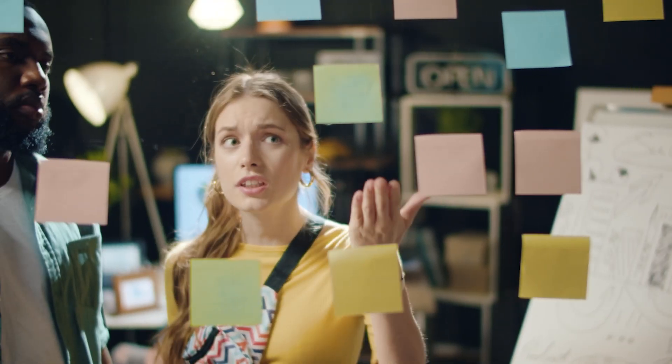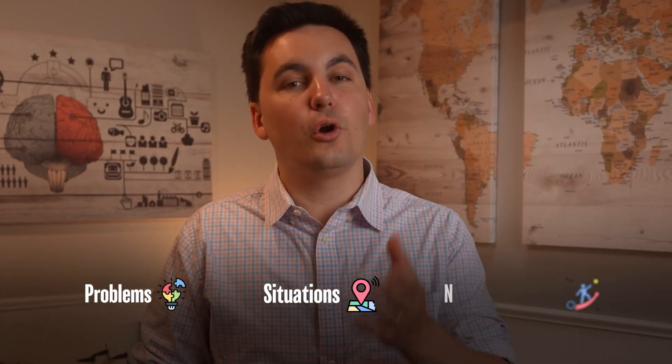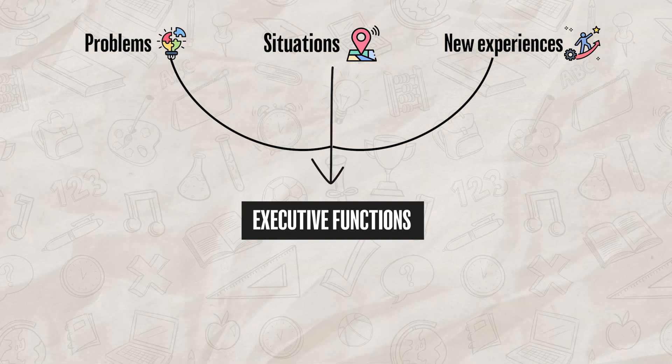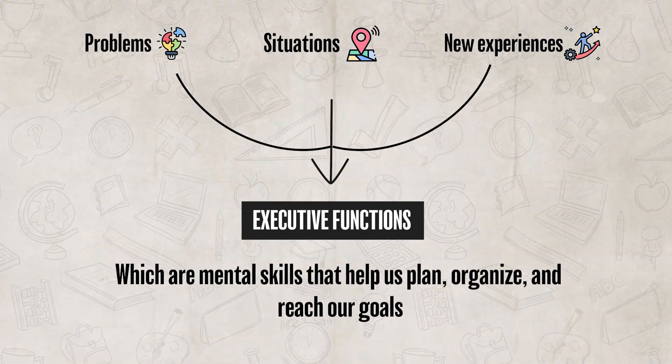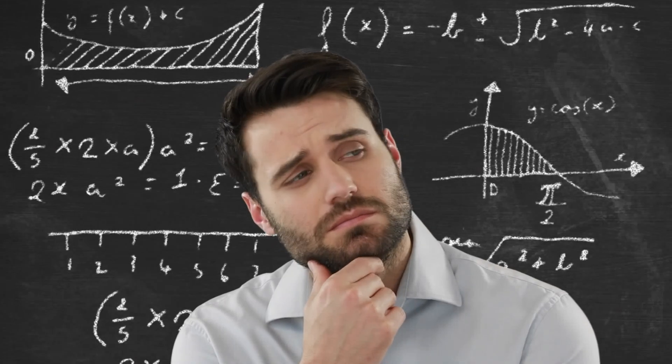Besides trying to figure out how to categorize information or what to expect in a situation, our brain also needs to do a lot of problem solving. Whenever we encounter different problems, situations, or new experiences, we utilize our executive functions, which are mental skills that help us plan, organize, and reach our goals. These are the skills that allow us to think critically, make a plan, stay focused, remember important information, and of course solve problems.